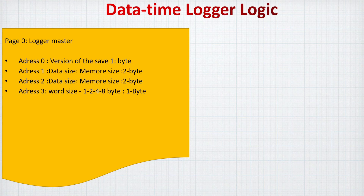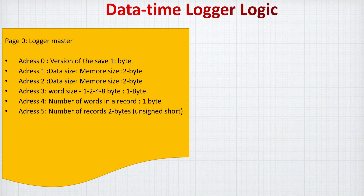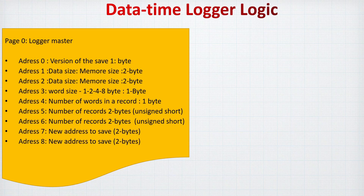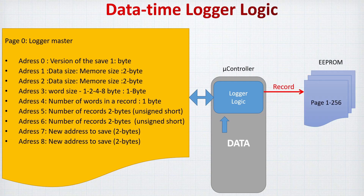At address zero we save the version of the data logger. Then we use two bytes to save how much memory is available in the EEPROM, to avoid over-saving. After that we save the word size — not used in this example but useful for future applications. Then we save how many bytes we are going to record, followed by the number of records. Since we have 4,096 possible records, two bytes are used. Finally, the last address is stored so the microcontroller knows where to start saving again, and it saves from page one to page 256.